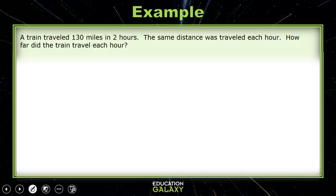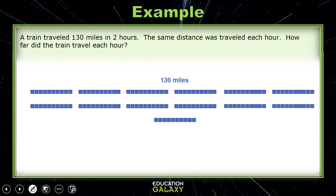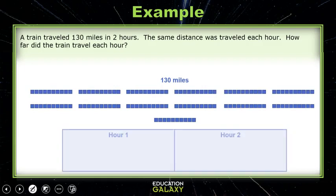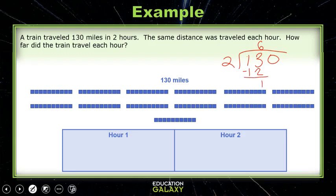A train traveled 130 miles in two hours. The same distance was traveled each hour. How far did the train travel each hour? We have 130 miles, and we're trying to split these 130 miles into two hours. We could do 130 divided by 2. 2 doesn't go into 1, so we look at 2 going into 13. I know 2 times 6 is 12, and 13 minus 12 is 1. Bring down the 0 — that makes 10. 2 goes into 10 five times, so our answer is 65.